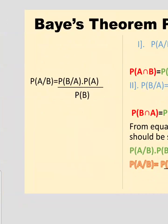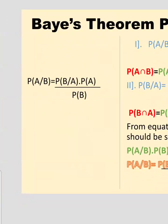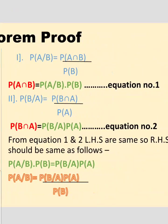We will now prove Bayes' theorem using conditional probability. For the first part, the conditional probability P(A|B) is equal to P(A ∩ B) divided by P(B). From this, P(A ∩ B) becomes P(A|B) multiplied by P(B), which is our equation number one.